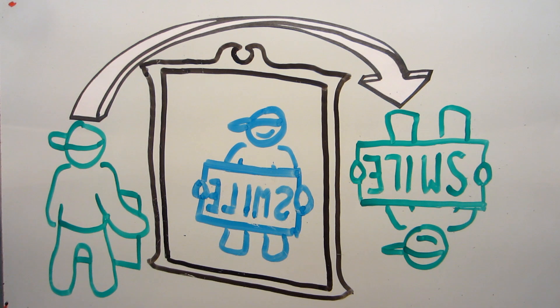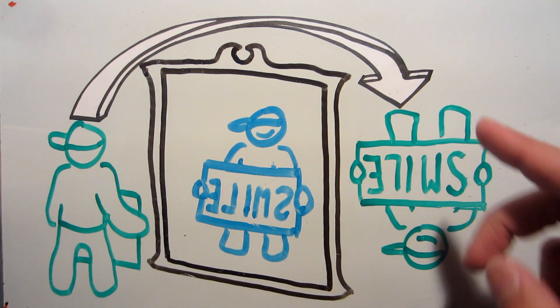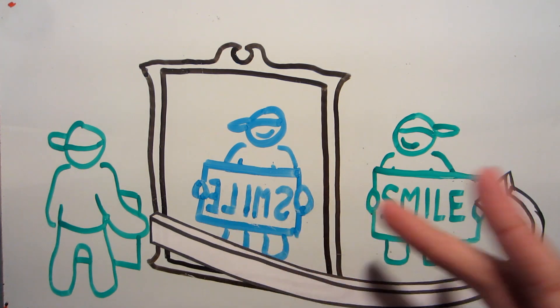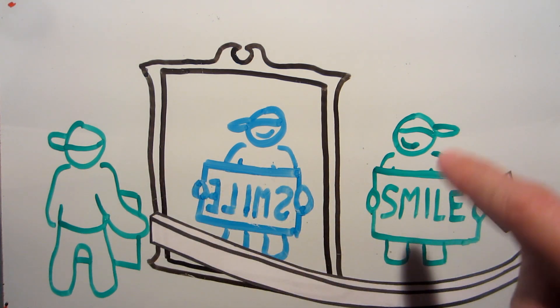Now at this point you may be thinking, well of course it's flipped upside down, you turned the object end over end before you compared the two, and you're right, but realize that the same reasoning applies to our first method. Of course the image was flipped left to right there, because we spun the object around that way before comparing them.